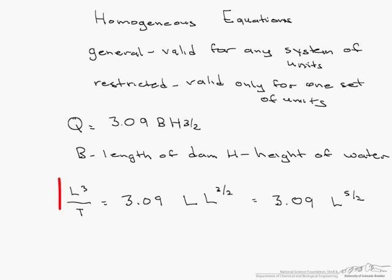On the left side we have L³/T, on the right we have L^(5/2). For this to be homogeneous with the same dimensions on both sides, 3.09 must have units of L^(1/2)/T, which times L^(5/2) gives L³/T.